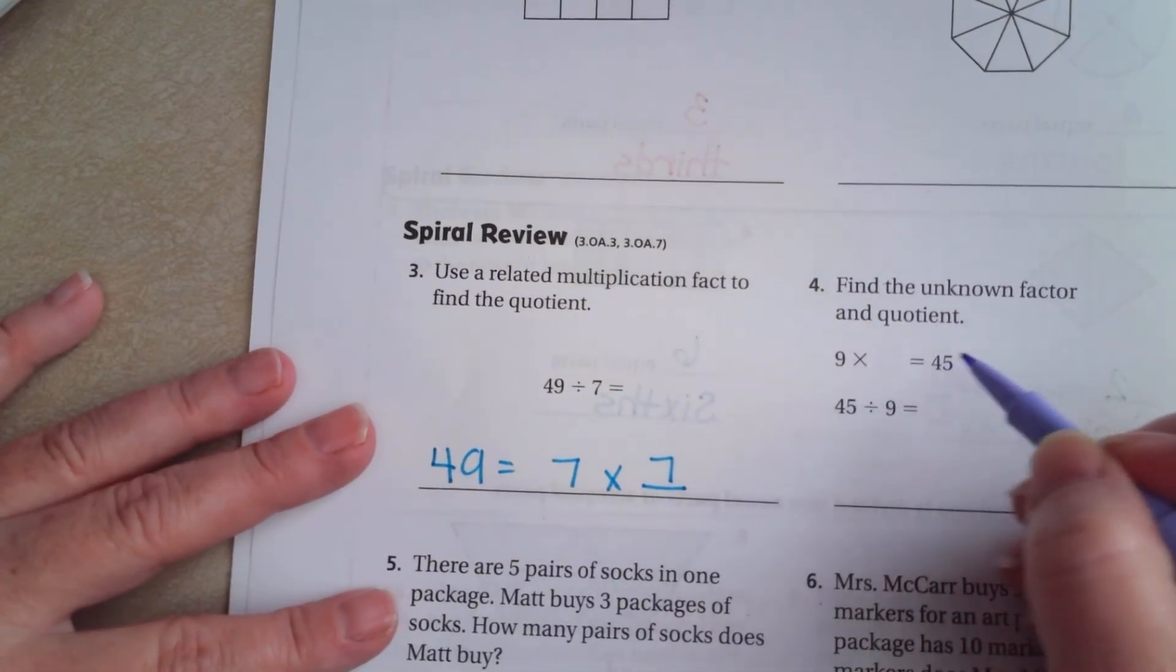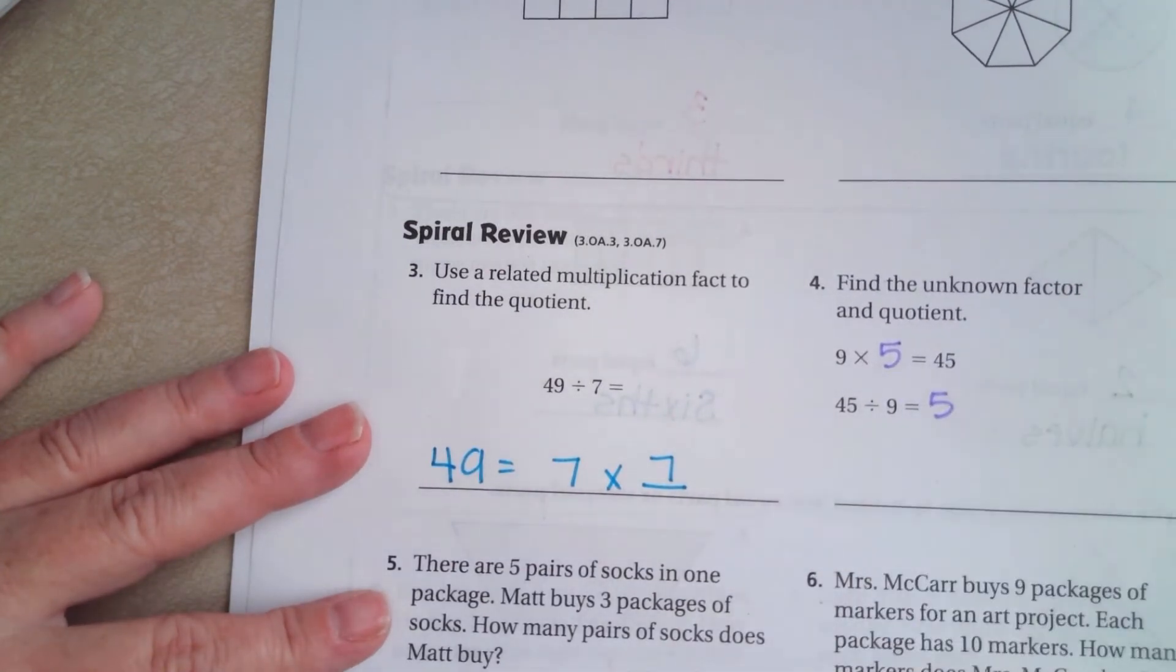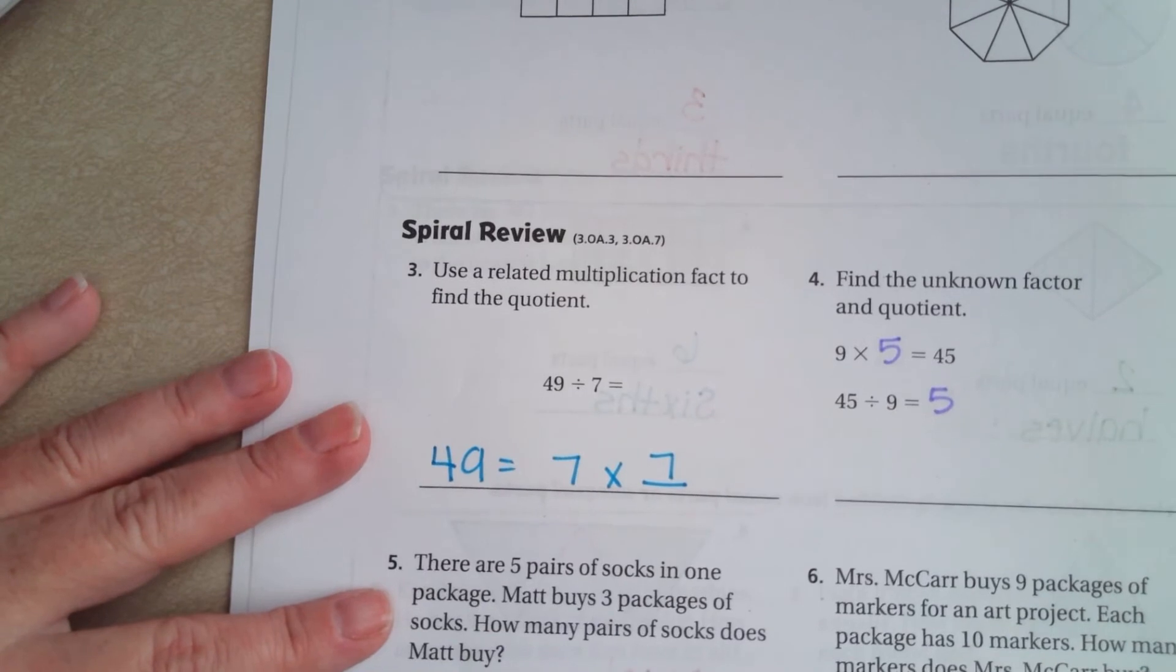Find the unknown factor. Well, nine times what is 45? Nine times five.